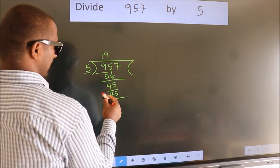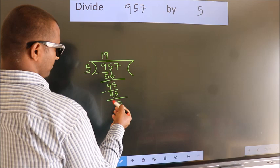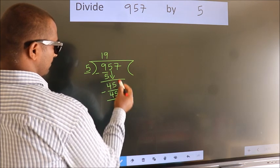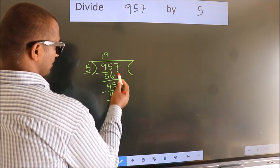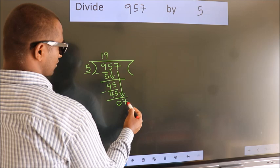Now we subtract. We get 0. After this, bring down the beside number. So, 7 down. So, 7.